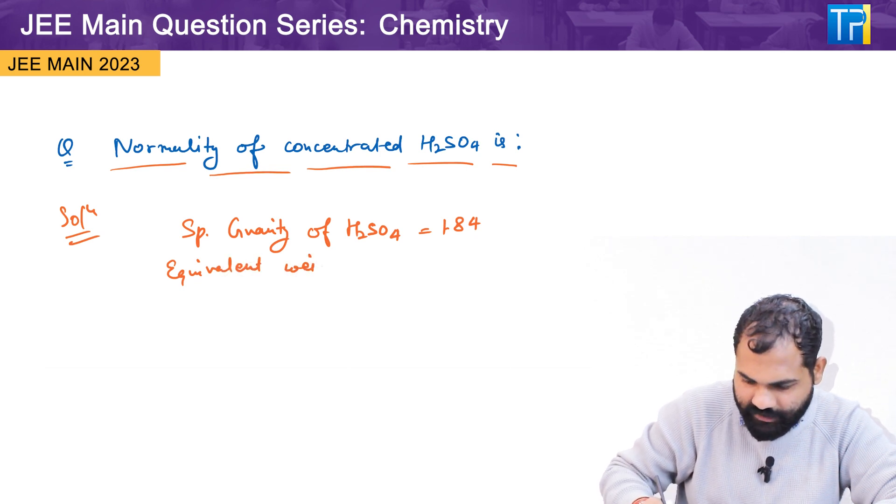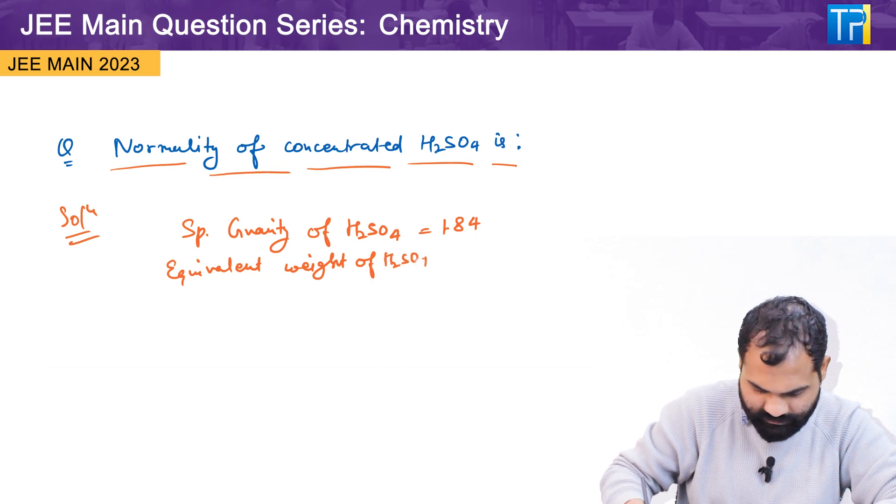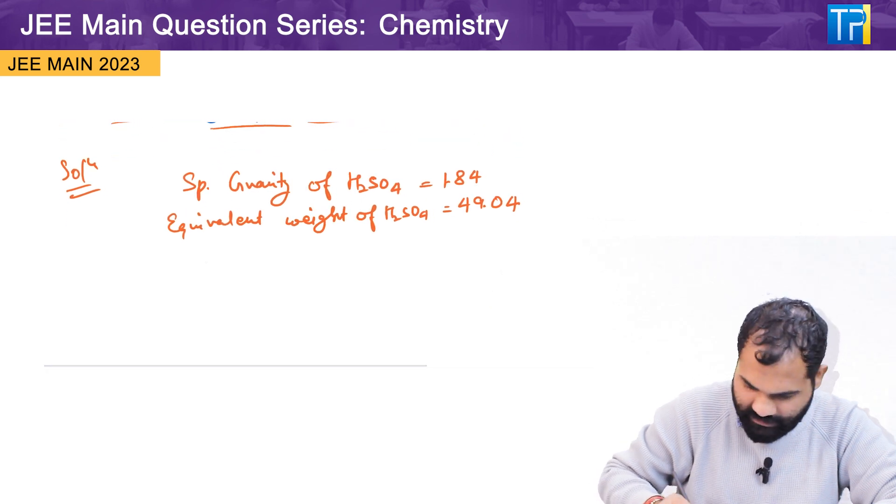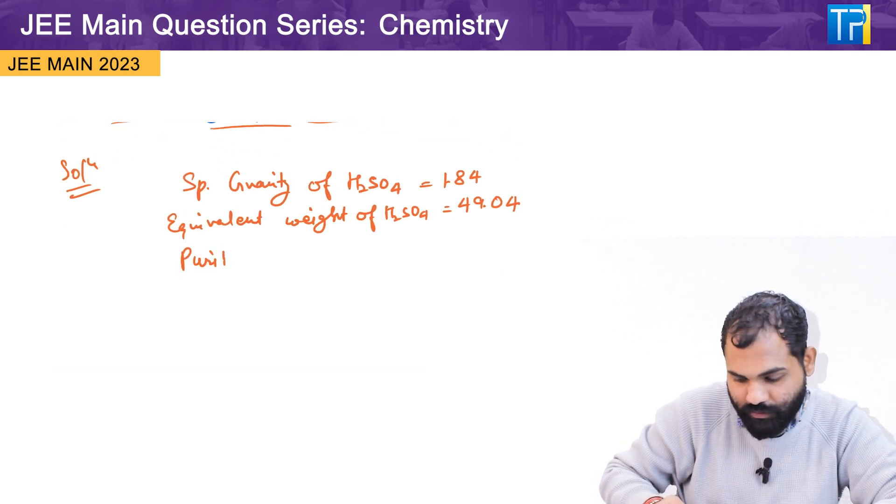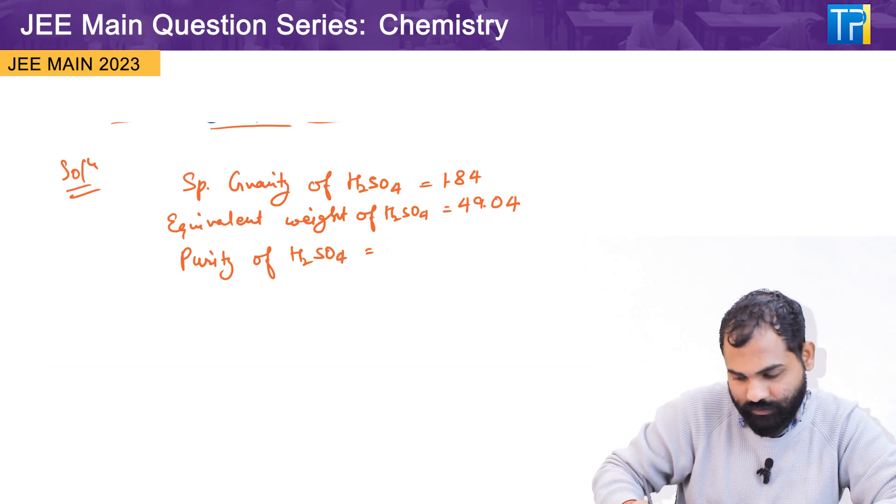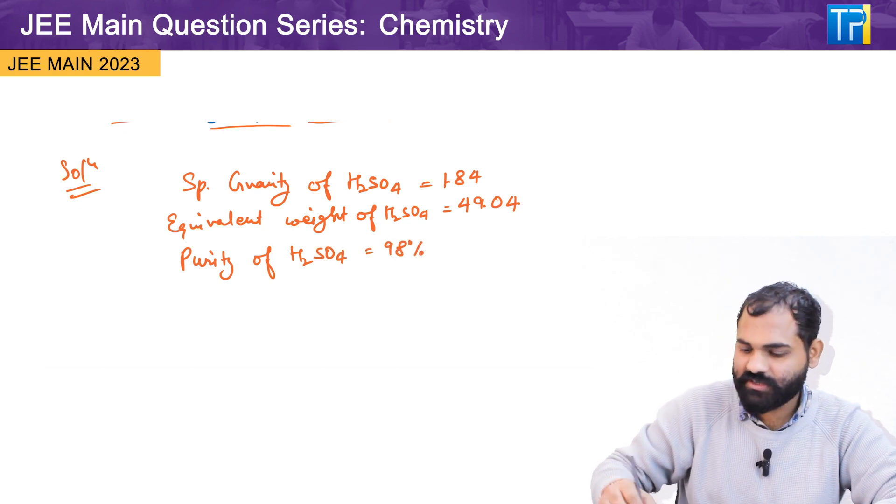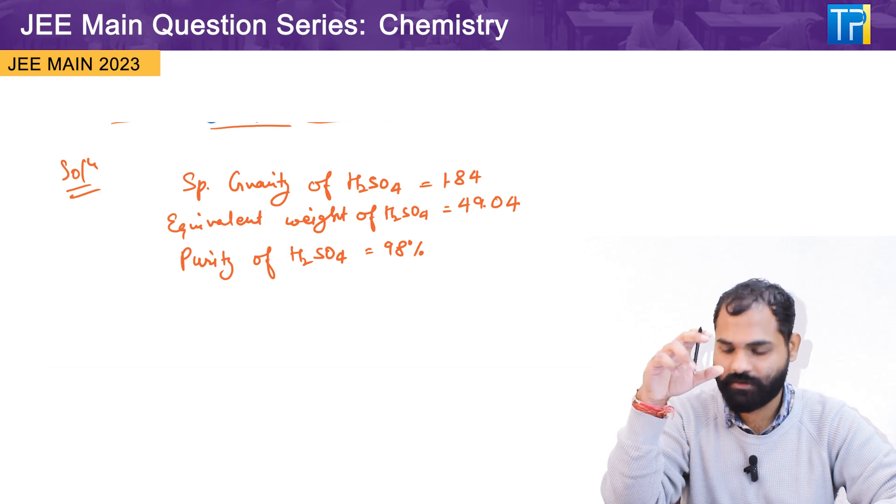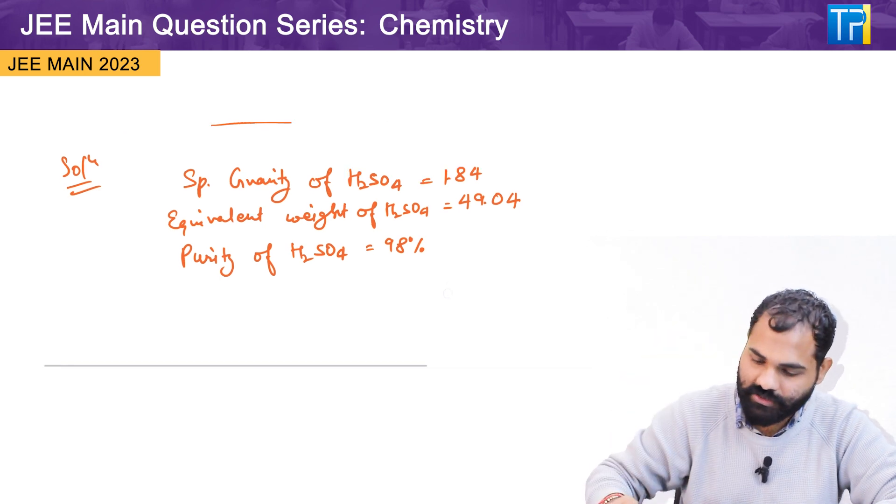The equivalent weight of H2SO4, which is 49.04, and the purity of H2SO4, which is 98%. These are the things that you are required while you are finding the normality of a chemical compound.